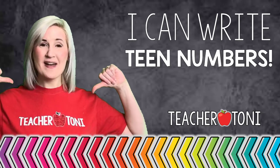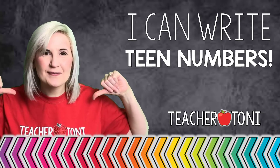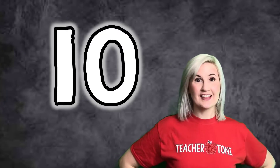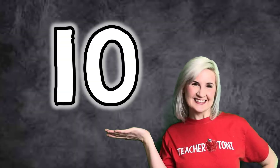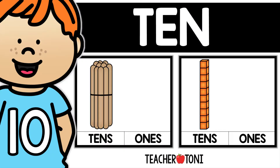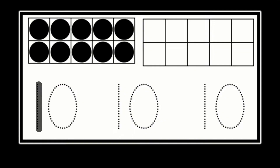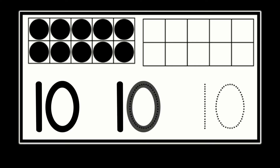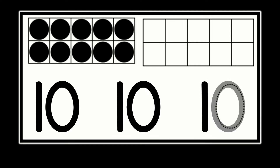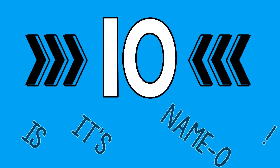I can write my teen numbers. Let's start with 10. I can write a teen number. 10 is its name. Oh, 1, 0, 1, 0, 1, 0. 10 is its name.